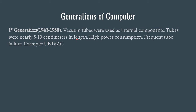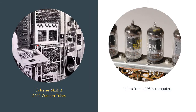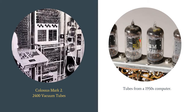There were thousands of such tubes in a single computer, which we can't even imagine in modern day computers. An example of this is the Univac machine, and these computers were huge in size — they occupied nearly a complete room. This is one image of the Colossus Mark II, which contained 2400 such vacuum tubes. To the right side of this slide, you can see some vacuum tubes from computers of the 1950s era. You can see the size of each tube and imagine how large a computer with 2400 such vacuum tubes would be.